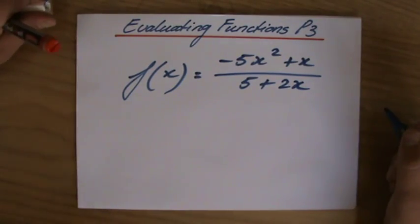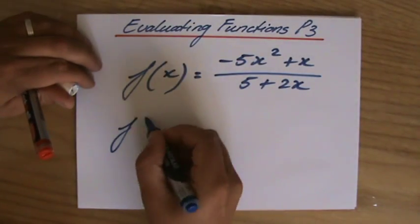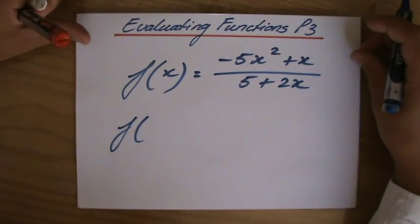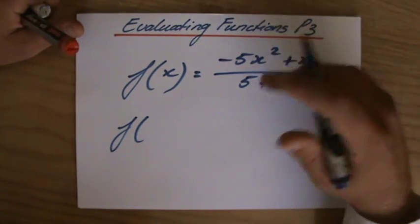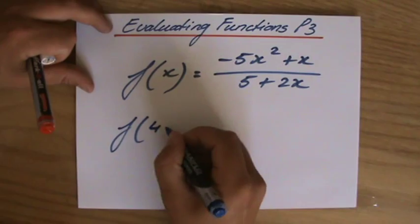And we have to evaluate this function for f. What shall we do? Can we pick a number? Shall we do a negative number? Let's do a positive number first, and we'll do a negative afterwards. Let's say 4.